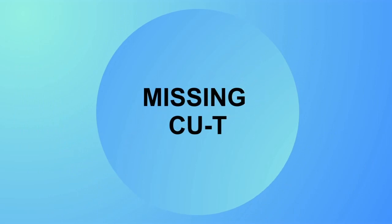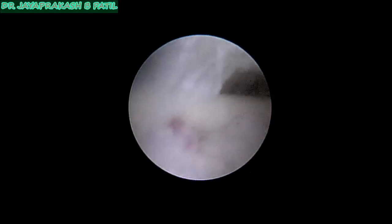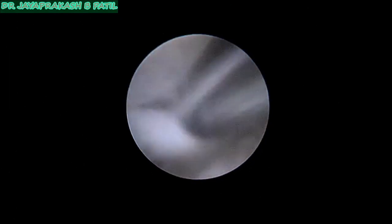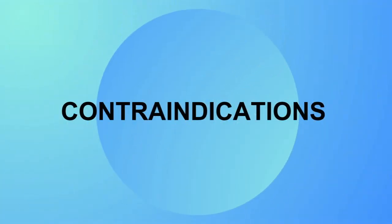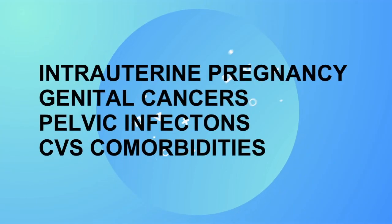Nowadays with a lot of push for postpartum IUCD, many women are coming with a lost IUCD where the thread is not seen, and everyone tries doing a DNC or proceeding under anesthesia. However, we can remove it under office procedure without much problem. There are some contraindications — if you suspect a pregnancy, infection, or malignancy.